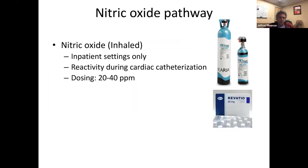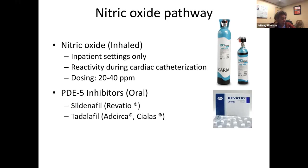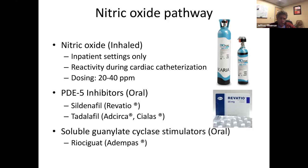For the nitric oxide pathway: acutely we give nitric oxide inhalationally and use it during cardiac catheterization for reactivity testing. Orally, we block the breakdown of cyclic GMP by inhibiting PDE5. This can be done with sildenafil three times a day — there's a suspension for kids who can't swallow pills — or once-daily tadalafil, which we switch to when they're older. Riociguat is a soluble guanylate cyclase stimulator; we don't use this much in children — it was studied and approved for CTEPH.